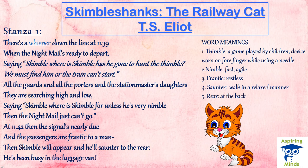The mention of the word thimble is just for the sake of rhyming — there is no concrete meaning here. The words are randomly placed, showing this is not a very serious poem by T.S. Eliot. It becomes very necessary to find Skimble Shanks, or the train will not be able to depart. The guards, the porters, and the station master's daughter are searching high and low — meaning everywhere. At 11:42, passengers are frantically awaiting Skimble Shanks' arrival. Finally, he appears from the luggage van, walking in a very relaxed manner — a strong contrast to the frantic searching — and walks towards the engine.